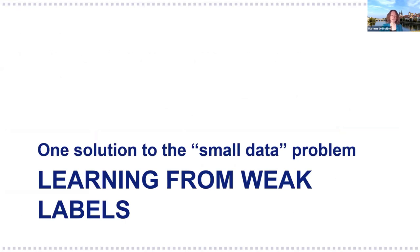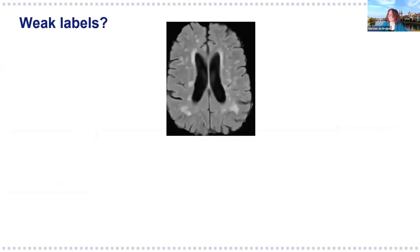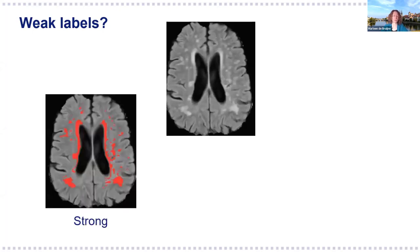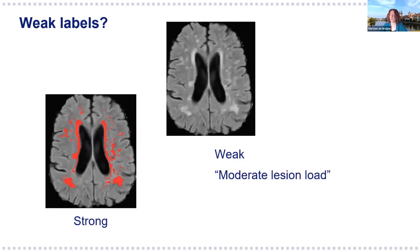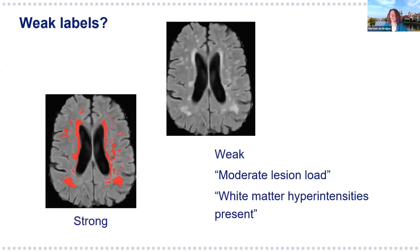One possible solution is to train models from so-called weak labels. Weak labels are any type of labels that contain less information than the label you want to predict, and they are typically much easier to obtain. For instance, for the task of quantifying white matter hyperintensities in brain MRI, a typical strong label would have a radiologist indicate for every voxel whether it belongs to a white matter hyperintensity or not. Whereas weak labels could state something like there is a moderate lesion load in this image, or there are white matter hyperintensities present, or just the number of lesions visible in a certain slice.